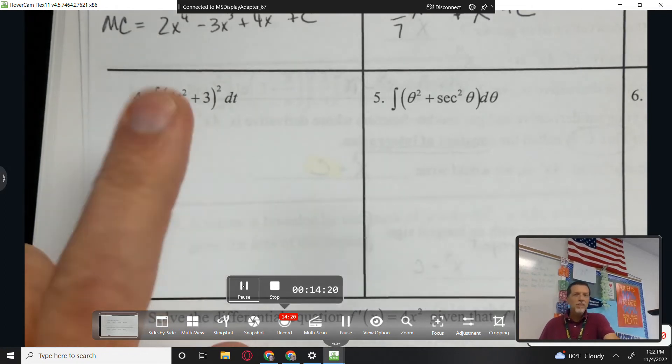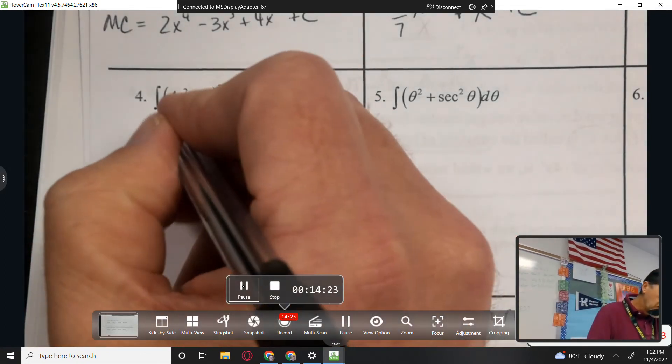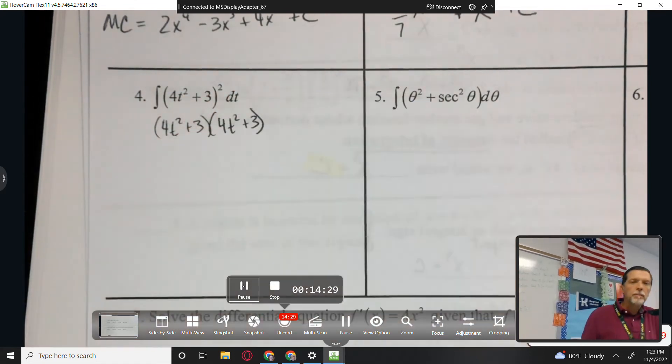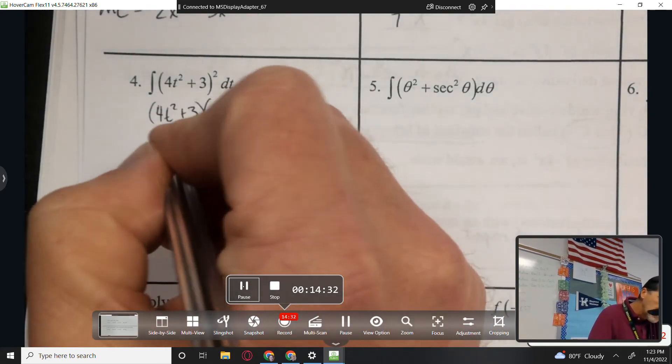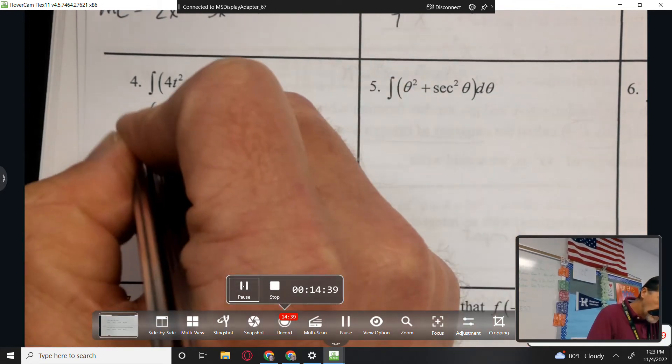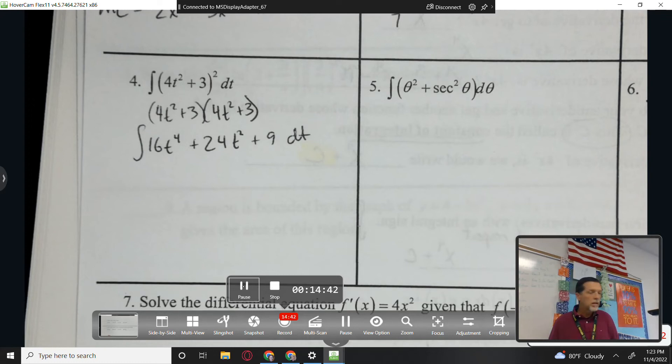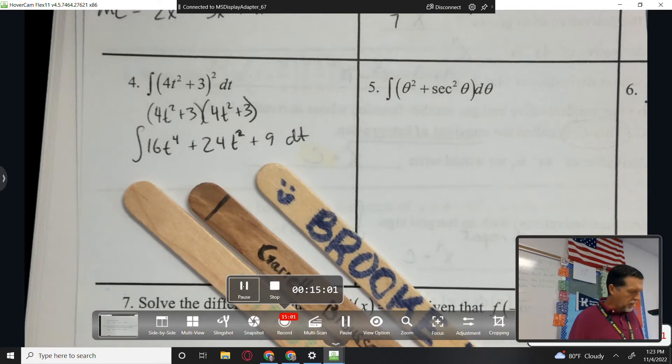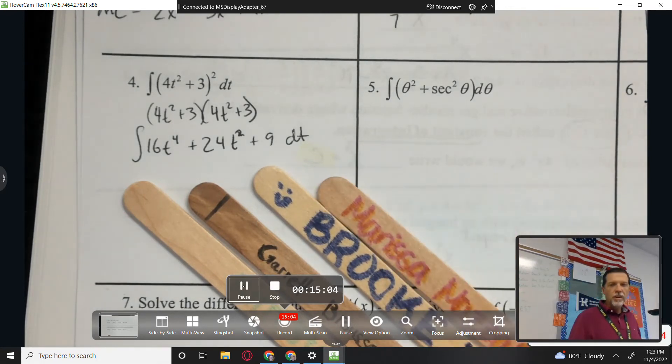So let's foil it. So we're just doing algebra. 4T squared plus 3 times 4T squared plus 3. So I'm not doing calculus right now. I'm doing algebra to make my calculus life easier. So I foil it out. And now I can take the antiderivative of each of those pieces. And there looks to be 3 pieces. So perhaps 3 popsicle sticks. But there's actually a hidden fourth piece that Marissa will tell us about when we get there.